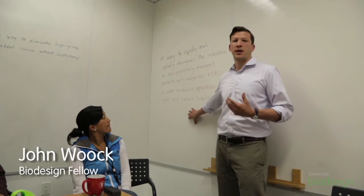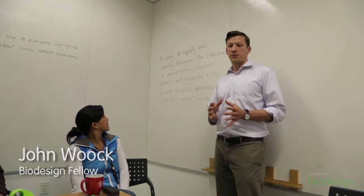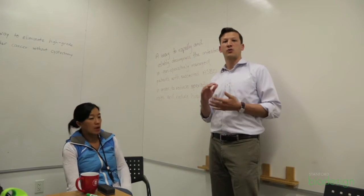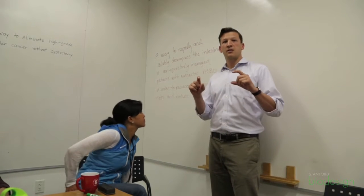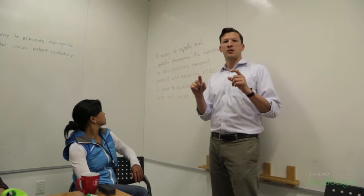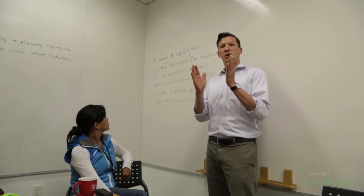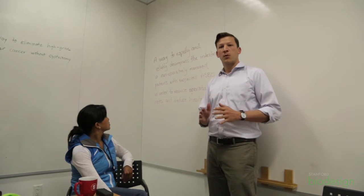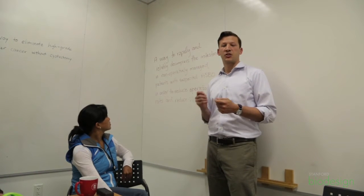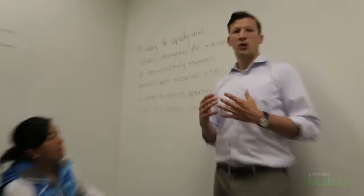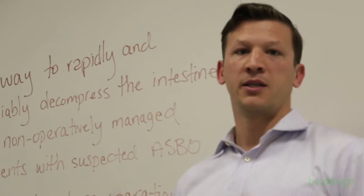Typically when we have a need statement like this, we would find an opportunity to scope the need statement up and down, to test the specificity of the statement in terms of the population and the outcome. Should we broaden or narrow the population and outcome to make sure that we've really found the sweet spot in terms of who and what we want to target and the need we're addressing?